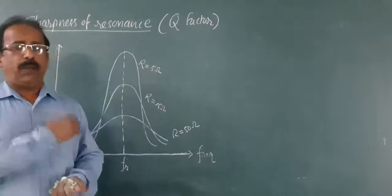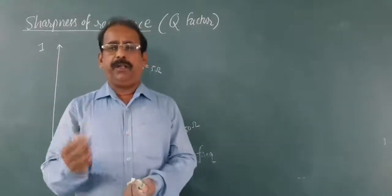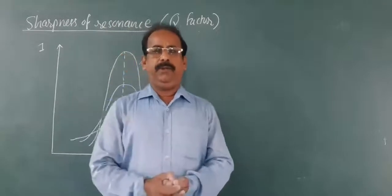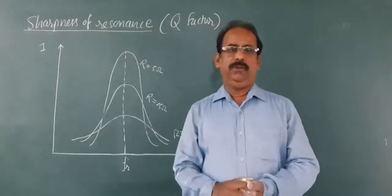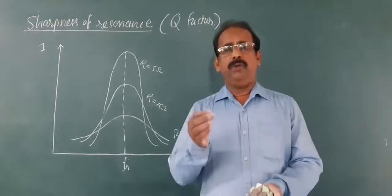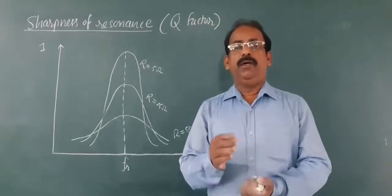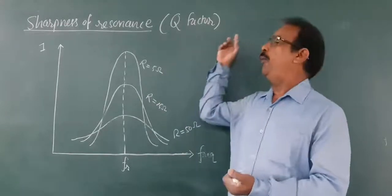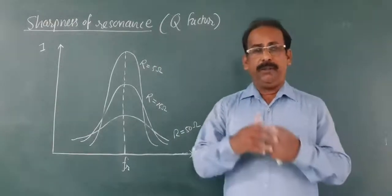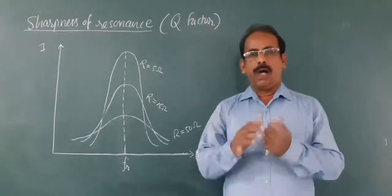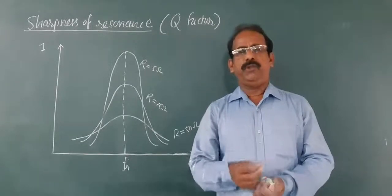The sharpness of resonance means more selectiveness. The selectivity of the resonance circuit depends on the sharpness of resonance. The sharpness of resonance is decided with the help of a coefficient called Q-factor.